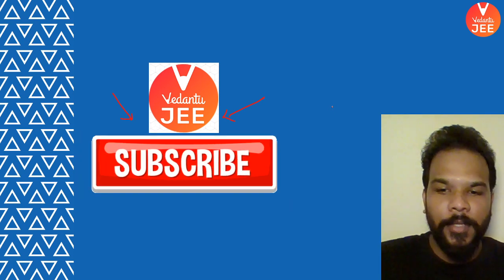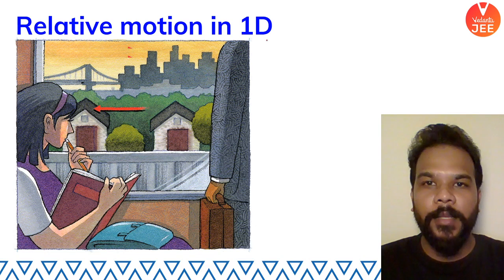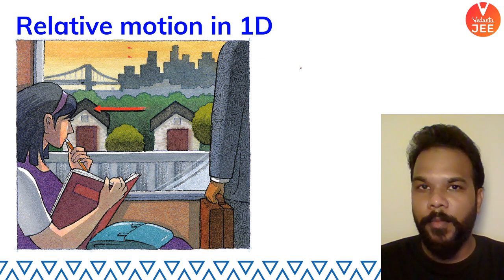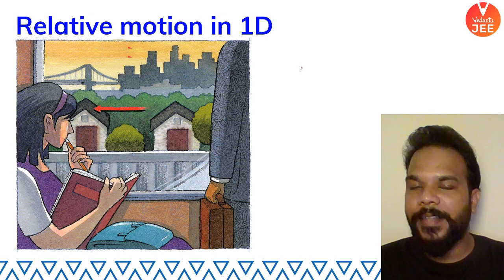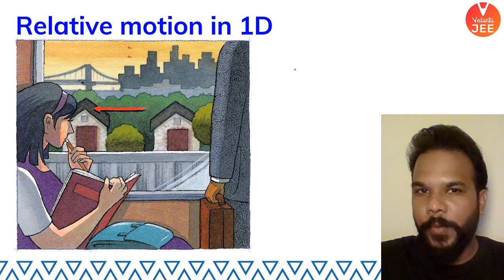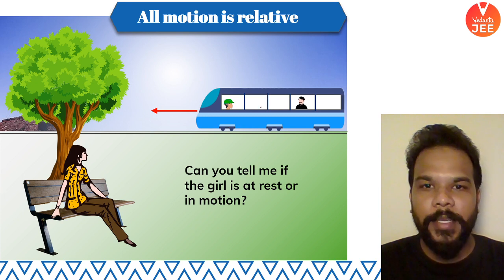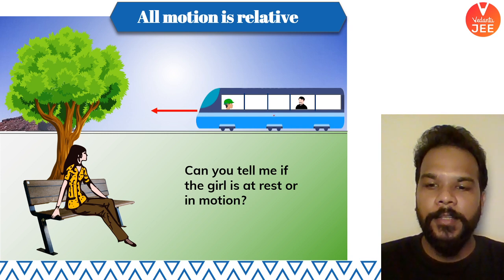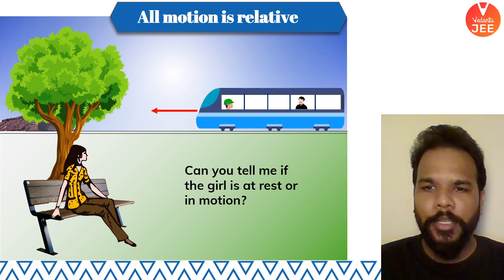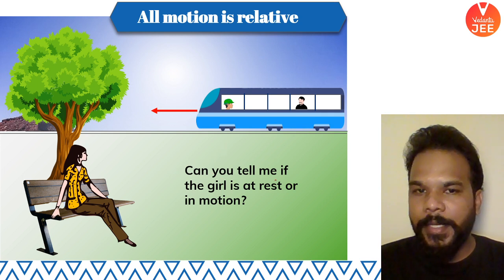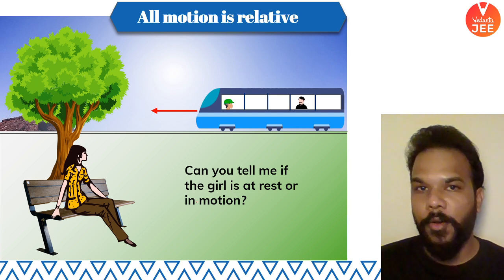Let's start the interesting topic of relative motion. I'll try my best to give you the gist so you can solve every problem. Let me start with a question: here you see a train moving to the left, passengers inside, and a girl sitting on a bench outside. Can you tell me — is the girl at rest or in motion?